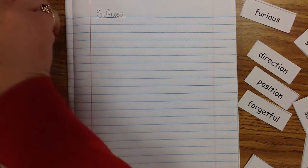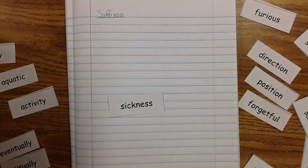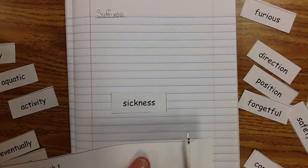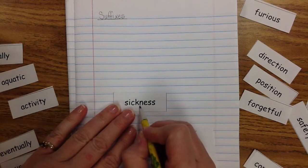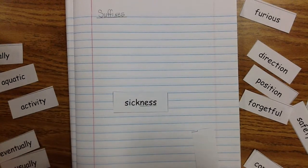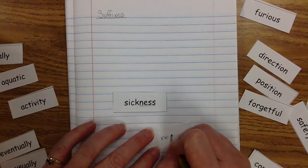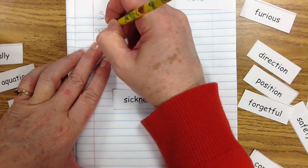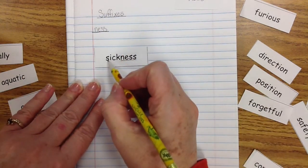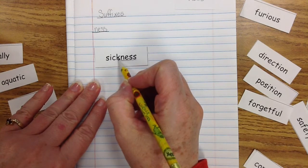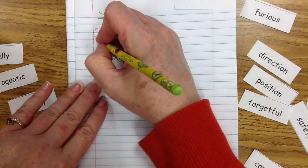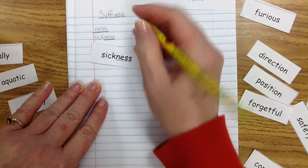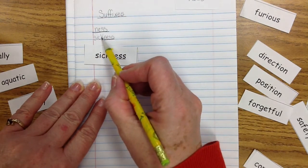Let's look at 'sickness.' What is the base or root word? Sick, right? So -ness would be our exemplar, which is our suffix. We're going to do N-E-S-S. Let's spell the base word: S-I-C-K. Now let's spell the suffix: N-E-S-S. Sickness: S-I-C-K-N-E-S-S. Underline the suffix -ness. Let's spell it again: S-I-C-K-N-E-S-S.